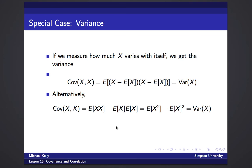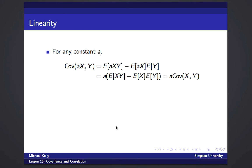Let's look at the properties of covariance. If we have a constant a and look at Cov(aX, Y), applying the alternate formula gives E[aX·Y] minus E[aX]·E[Y]. Since a is a constant it pulls out of the expected values, giving us a times (E[XY] minus E[X]E[Y]), which is a times Cov(X, Y). So a constant pulls out of the covariance.